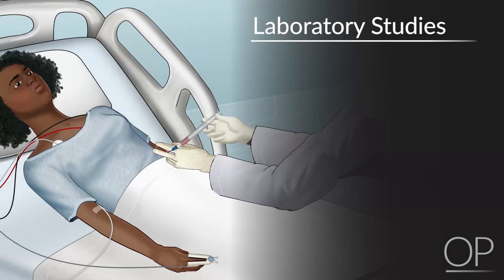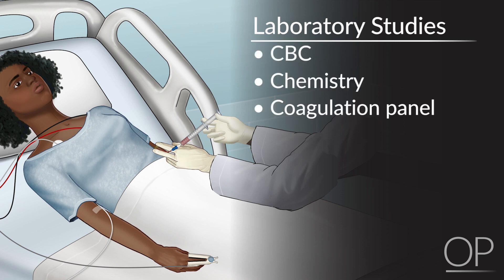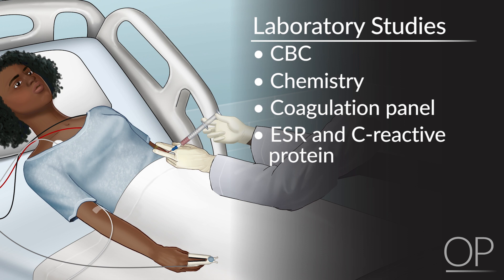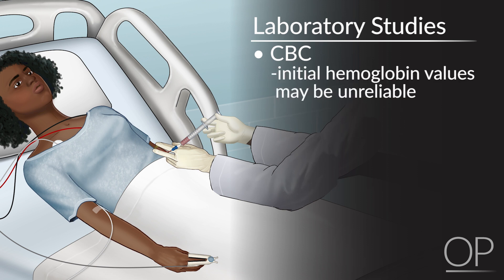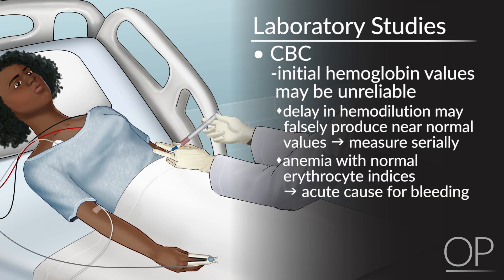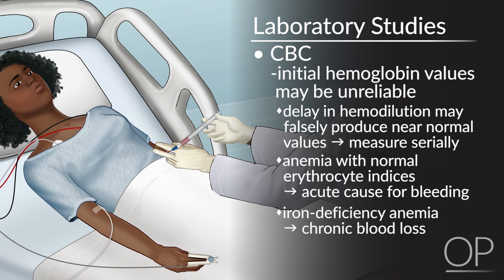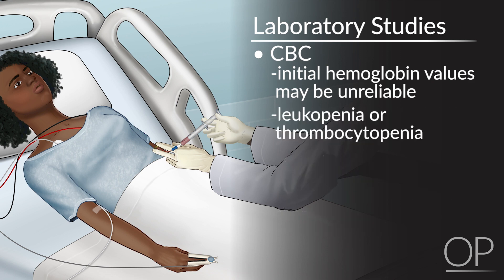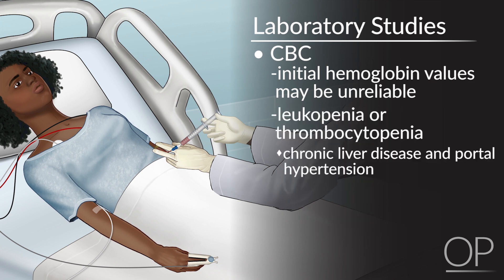Initial laboratory evaluation of a patient with a suspected GI bleed should include a CBC, chemistry, coagulation panel, ESR, and CRP. You should also send a type and screen to the lab. When performing a CBC, remember initial hemoglobin values may be unreliable — delay in hemodilution may falsely produce near-normal values. Therefore, CBC should be obtained serially. Anemia with normal erythrocyte indices suggests acute causes for bleeding. Alternatively, iron deficiency anemia suggests chronic blood loss. Leukopenia or thrombocytopenia may suggest chronic liver disease and portal hypertension, or hemolytic uremic syndrome.